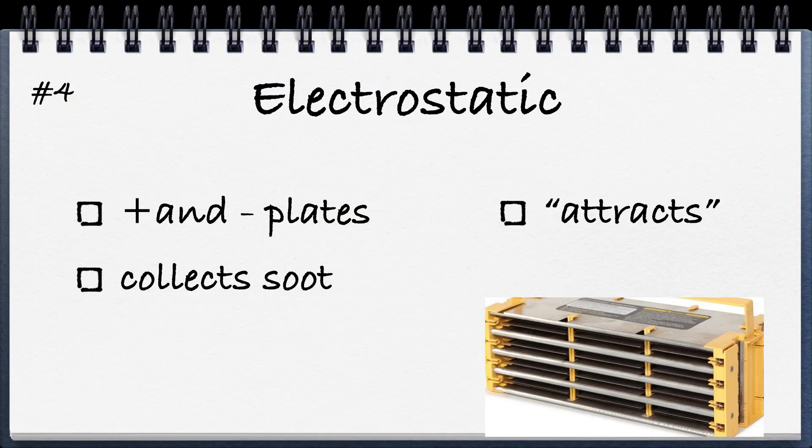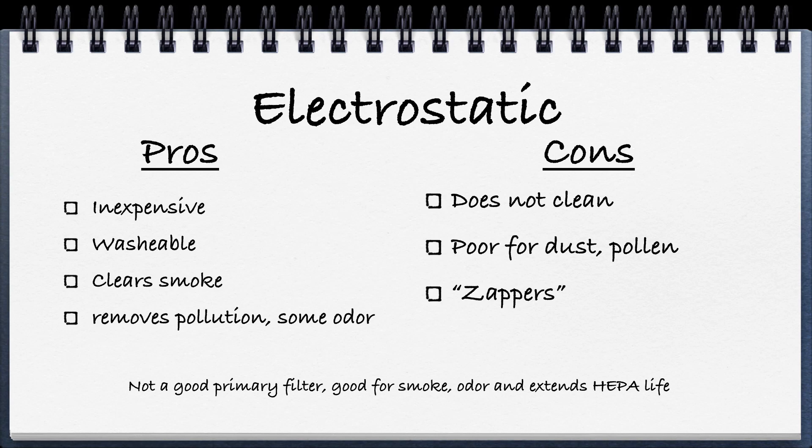Next is electrostatic — you've probably seen these advertised on television. They use positively and negatively charged plates that collect soot and attract molecules with the opposite charge. There's also a mesh version that doesn't create ozone. Pros: inexpensive, washable, clears smoke, good for pollution and some odor. Cons: poor for dust and pollen, sometimes makes a zapping noise, and can be rather expensive even though they're easy to make. Best used if you have a smoker in the house or need odor control.